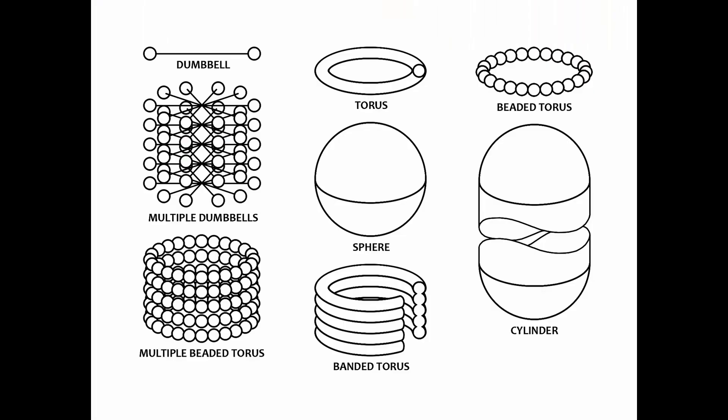Before that though I want to go over some of the basic designs suggested at the 1975 NASA summer study. I don't think we're going to look at dumbbells or the beaded toruses but torus, sphere, banded torus, and cylinder are a number of the ones that we'll be looking at here.